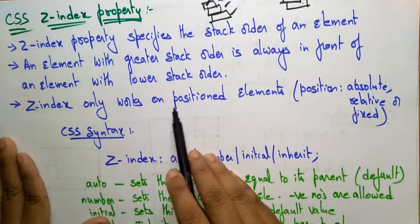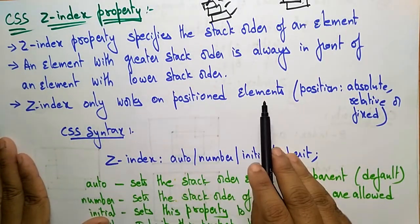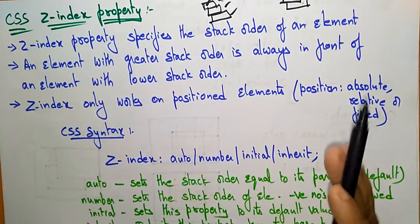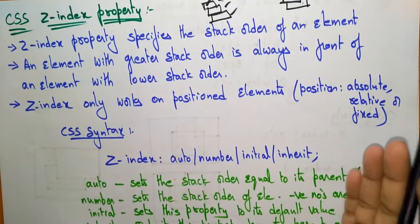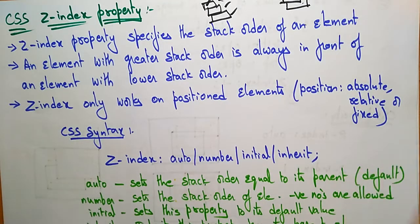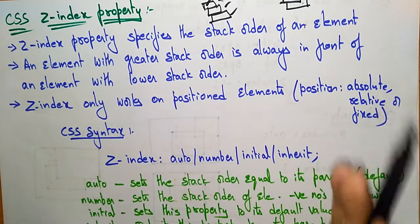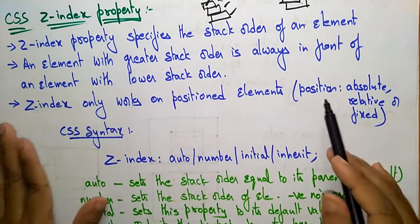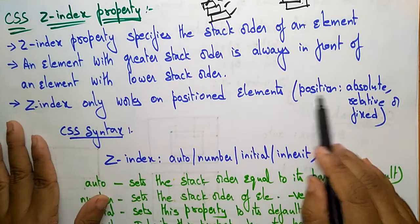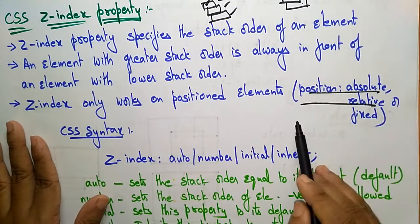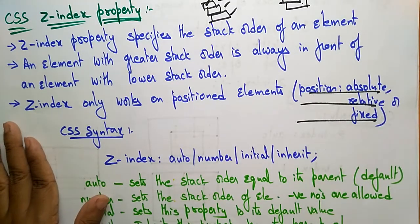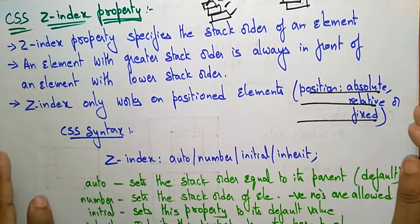Z-index only works on positioned elements. If you want to apply the Z-index property, it should work only on a positioned element — that is position absolute, position relative, position fixed, or static.